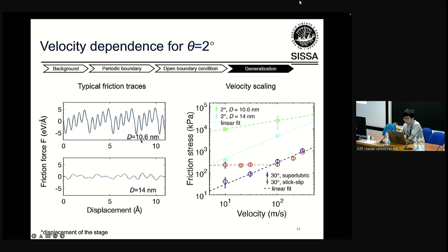For the 10 nm case, the friction traces show stick-slip behavior. For 14 nm, it is smooth sliding. Our velocity scaling results verify this: for 2-degree 14 nm (blue), it scales linearly; for 10 nm, it scales apparently sublinearly.